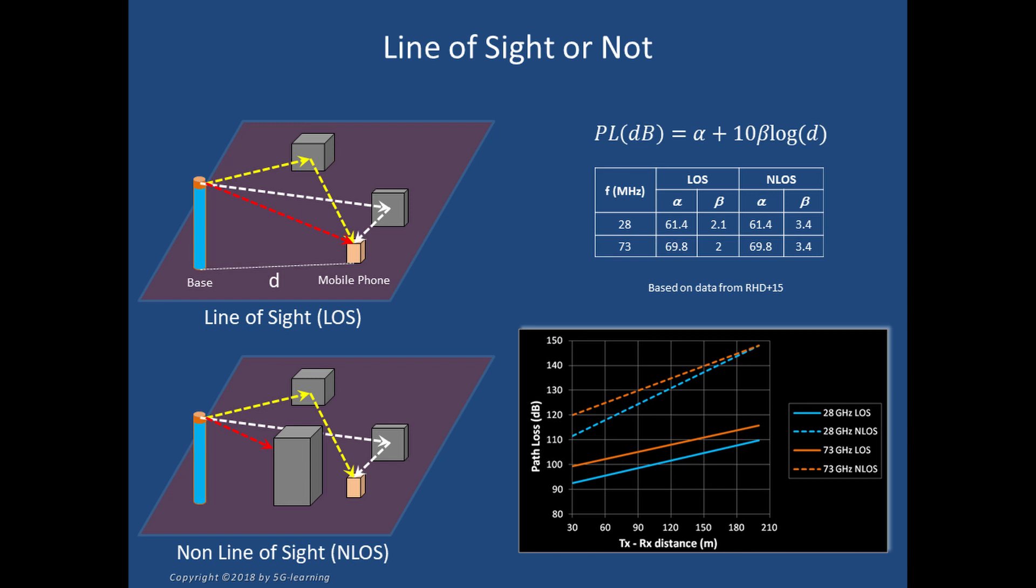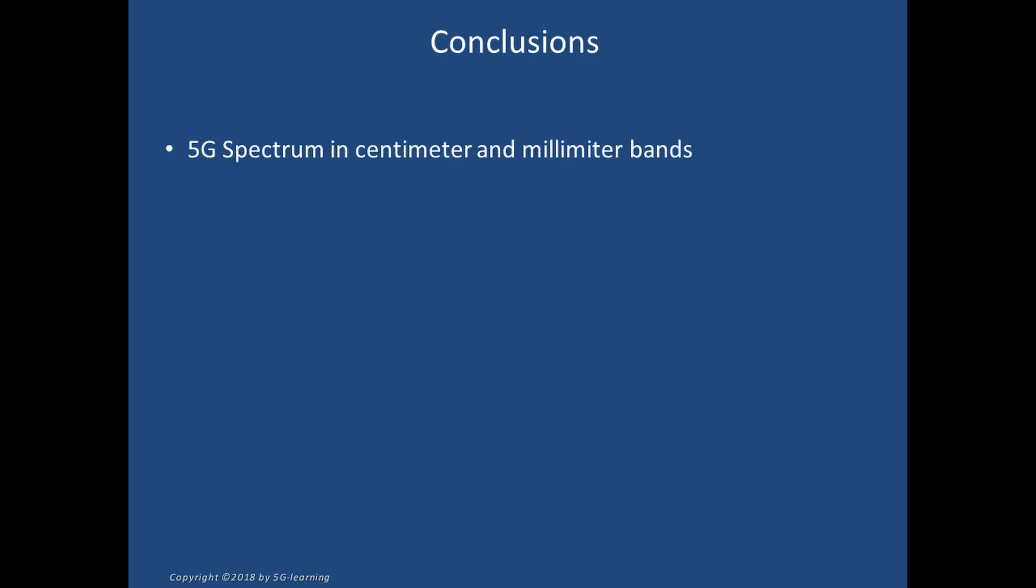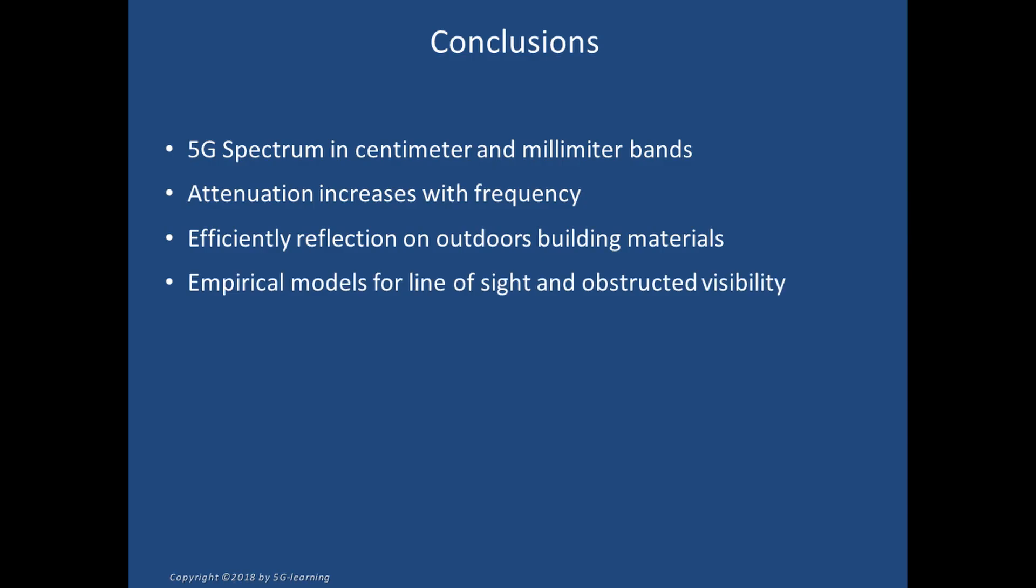Conclusions: In summary, ITU-R and 3GPP recommend 5G radio bands in the centimeter and millimeter domains. 5G radio waves are subject to stronger attenuation than their 3G and 4G counterparts. They are efficiently reflected by tinted glass, concrete, and other modern building materials. Therefore, reflection becomes a significant propagation mechanism in the outdoors environment. A simple model can be used as a first approximation to predict the expected path losses in direct or obstructed visibility.